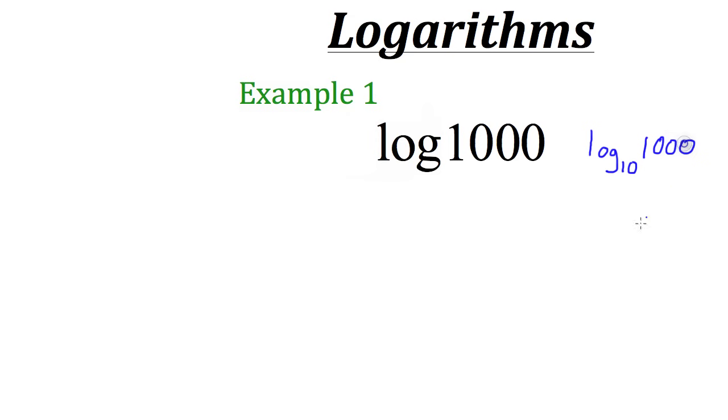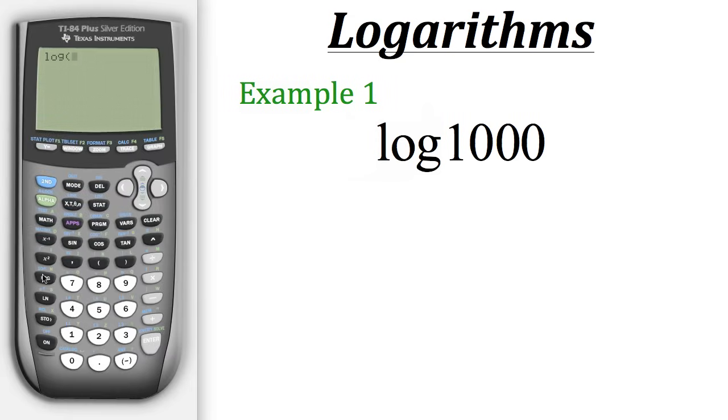Now let's evaluate that on the calculator. Now whenever you use this log button on the calculator, it always does a base of ten. So we don't need to worry about the base. We just say log of one thousand and then hit enter. So for us we can see that log of a thousand, or log with a base of ten of a thousand, equals three.